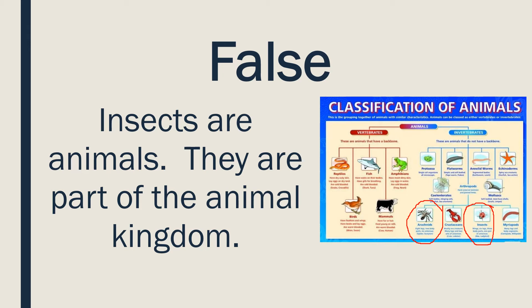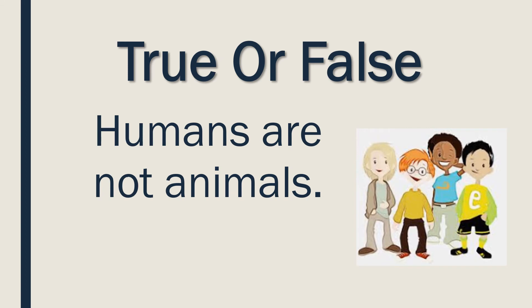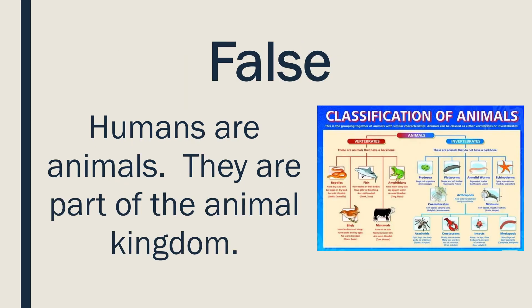True or false: humans are not animals? If you said false, you are correct. Look at the chart — I know it's really small — but under mammals, in the little tiny writing, it does say cows and humans. We are mammals, so we are part of the animal kingdom.